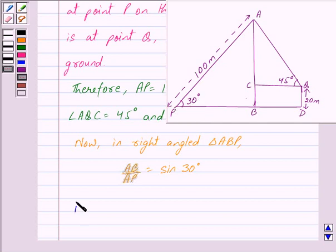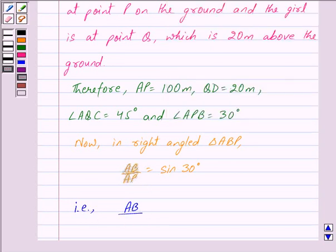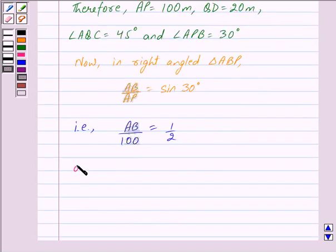That is we have AB upon AP. Now AP is equal to 100 meters, so we have AB upon 100 is equal to sin 30 degrees which is equal to 1 upon 2. Or we can say AB is equal to 100 upon 2 which is equal to 50 meters.